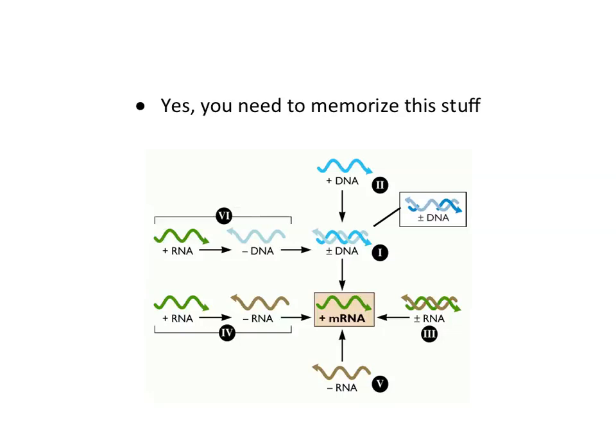As for what you need to memorize: you should know the seven genome types and how they reach mRNA. Single-stranded DNA can't be transcribed into mRNA, so you have to first make it double-stranded. In fact, the only thing that can be transcribed for DNA is double-stranded DNA. If I give you a gapped double-stranded DNA, you have to fill it in first. You should know all these pathways — we'll be talking about them over and over, so it shouldn't be difficult.